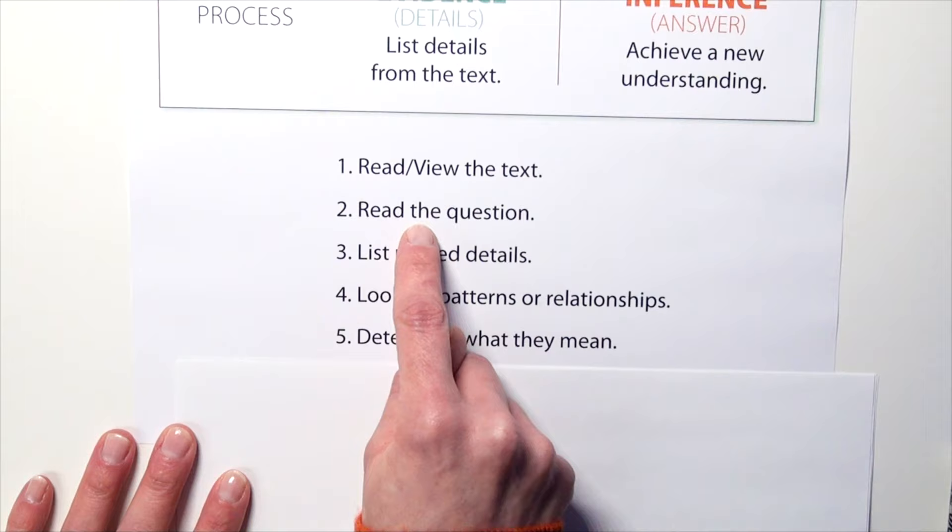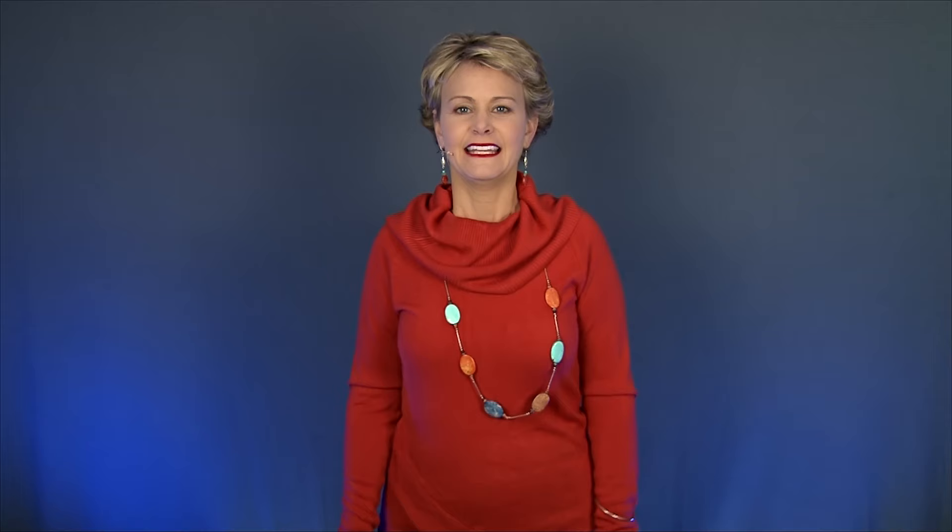Step one: read the text — we did that. Step two: ask and understand the question. Here's my question: what season does this scene take place in? And I know — you just said 'winter.' You did what all the students do: you did steps one, two, and jumped to five. It's easy to make the inference when you have background knowledge and the text is simple.